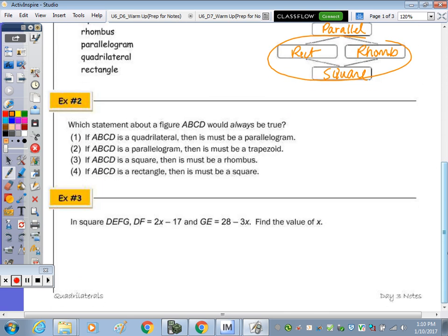So let's take a look at number two. Which statement about a figure A, B, C, D would always be true? So read those statements to yourself. You can use that diagram. The correct answer? Does anyone have it? Elizabeth? Three is correct. If it's quadrilateral then it's not necessarily a parallelogram. Okay, it can be any quadrilateral. If it's a parallelogram then it's not a trapezoid. That's not true. If it's a square then yes it's a rhombus. And if it's a rectangle then it must be a square. No.